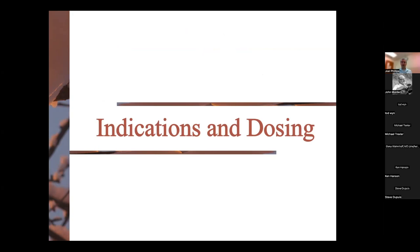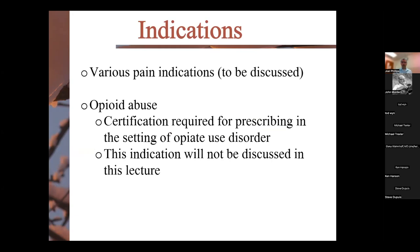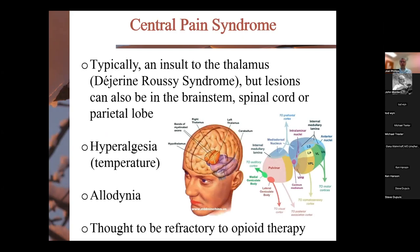There are a lot of pain indications for buprenorphine: somatic pain, neuropathic pain, and even opioid abuse — though today's focus is analgesic use. Central pain syndrome is a great example of neuropathic pain where it's used. This is typically caused by an insult to the thalamus — commonly stroke — but can also occur in the brainstem, spinal cord, or parietal lobe. It can cause a lot of hyperalgesia especially with temperature, and allodynia, and has traditionally been considered refractory to opiate therapy and non-responsive to neuropathic agents like gabapentin or Lyrica.